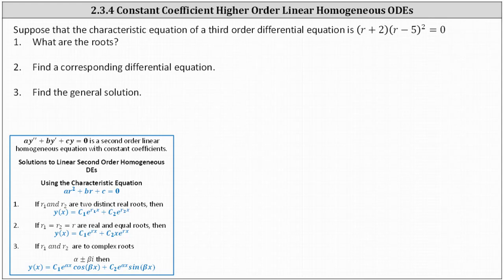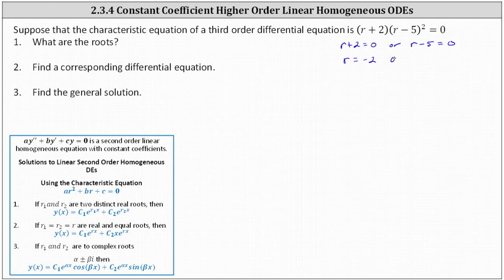The roots are going to be the solutions to the characteristic equation. Because it's already in factored form, the left side of the equation is equal to zero when r plus two is equal to zero, or r minus five is equal to zero. Solving for r, we have r equals negative two, or r equals positive five. But because we have two factors of r minus five, which gave us the root of r equals five, we say the root of five has multiplicity two. This will be important when we find the general solution to the corresponding differential equation.